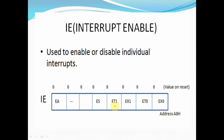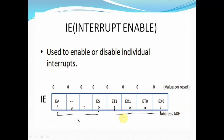Now let us consider the format you have to load. Suppose I want to enable ET1 — I want to make it equal to 1 and the rest of the bits equal to 0. But you also have to enable EA. So the format is: 1000 is 8 and again 1000 is 8. The instruction you write is: MOV IE, #88H. By loading the value 88H in the IE register, you are enabling timer interrupt 1.